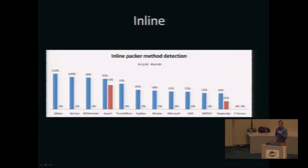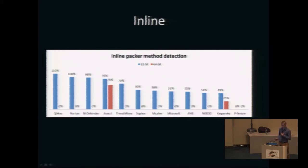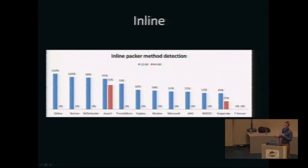We gathered malware samples for both 32-bit and 64-bit and packed them with this technique. For 64-bit it's already a good result — only two antiviruses still detect part of the original malwares. One antivirus, Keyhood, was actually detecting our inline technique rather than the original malware: we took 110 samples, packed them, and Keyhood started detecting them all — it's detecting our packing technique rather than the original malware.